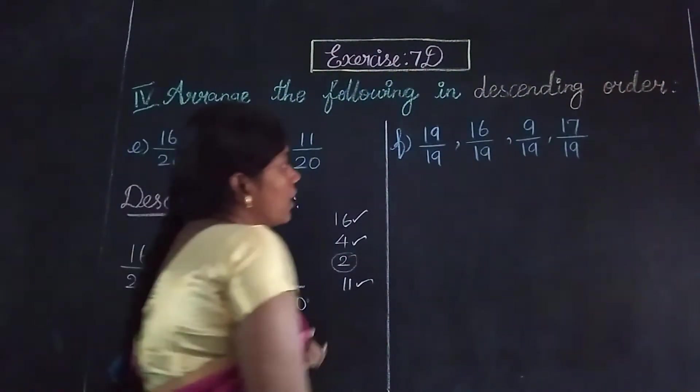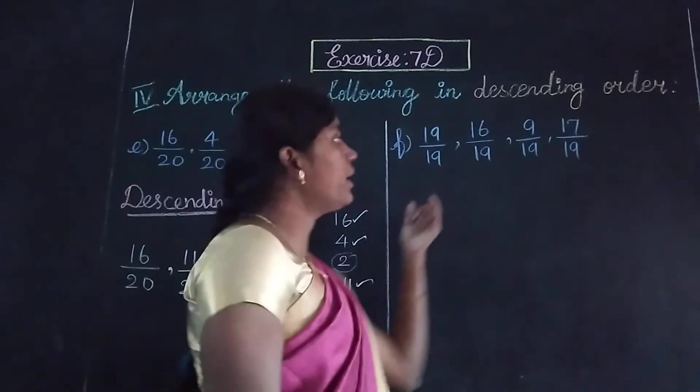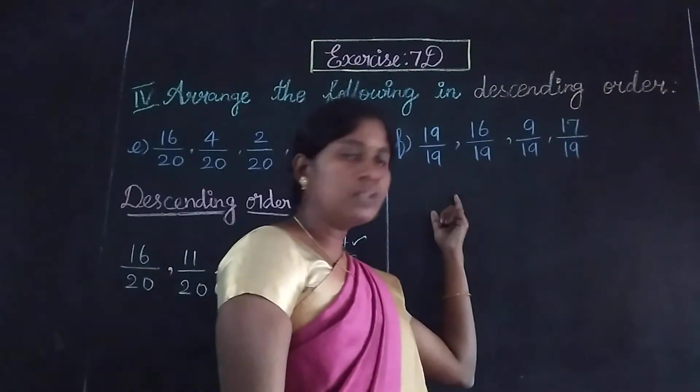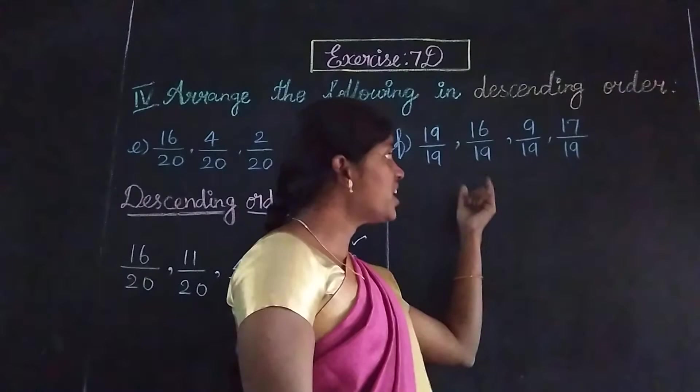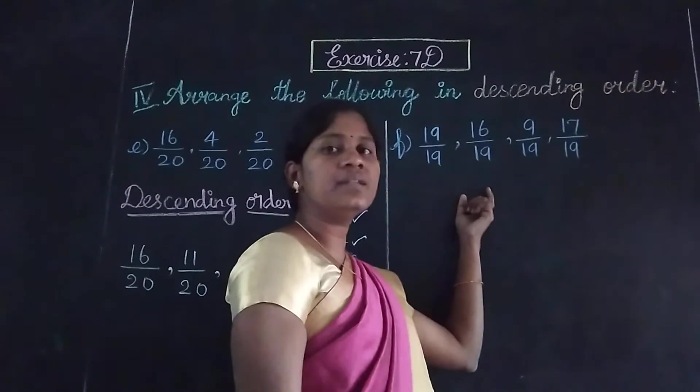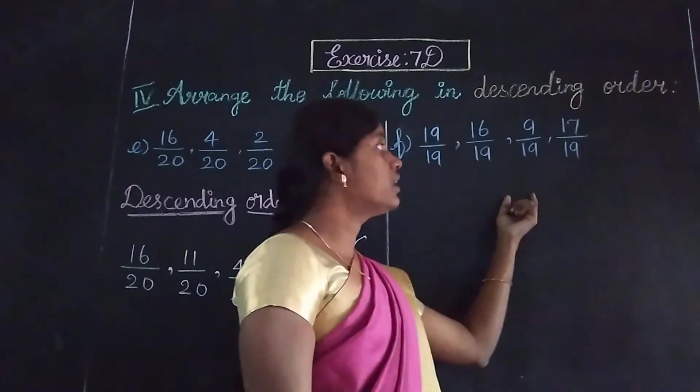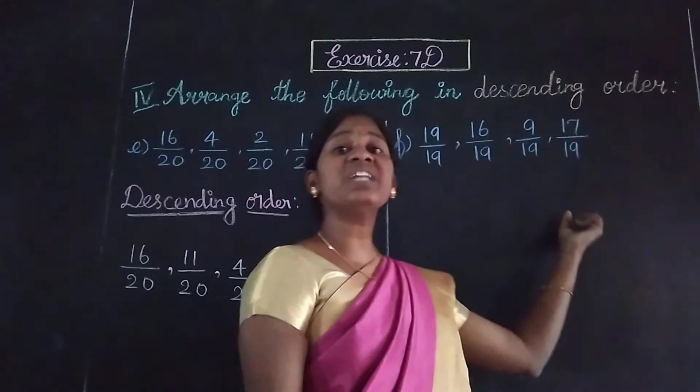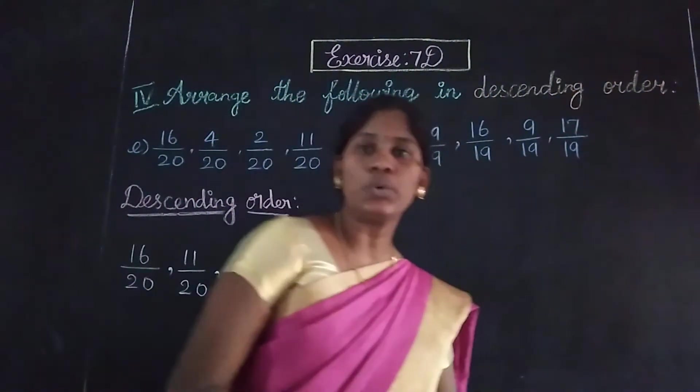Next is the second problem. The fractions are 19 by 19, 16 by 19, 9 by 19, and 17 by 19.